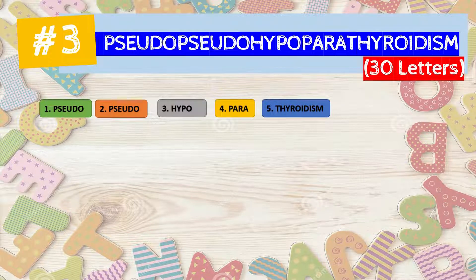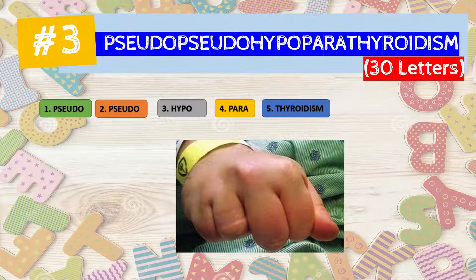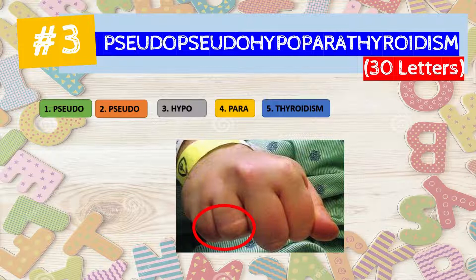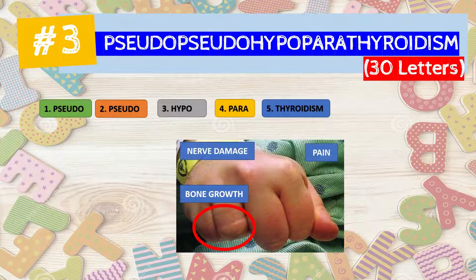Pseudopseudohypoparathyroidism is an inherited condition that causes short stature, round face, and short hand bones. It causes joints and other soft tissues in the body to harden. It also affects how your bones grow, and as a result it can cause bone, joint, and nerve damage. This damage can cause lasting pain.